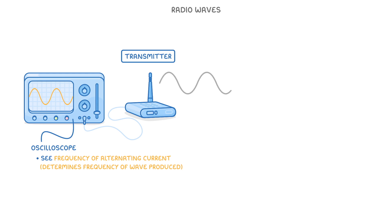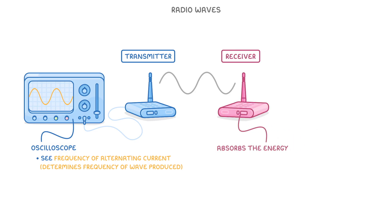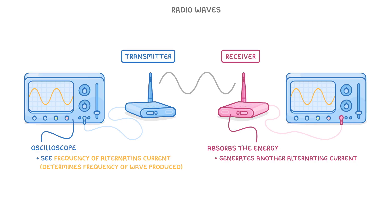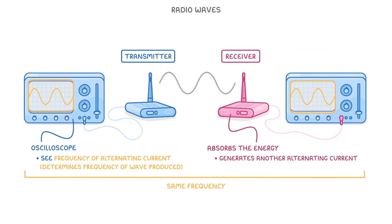Once the radio wave has been generated, we can detect it again by using a different device called a receiver, which absorbs the energy and generates another alternating current, which it displays on another oscilloscope. The key point to understand here is that the frequency of this alternating current that it produces is exactly the same as the frequency we used to generate the radio wave in the first place.